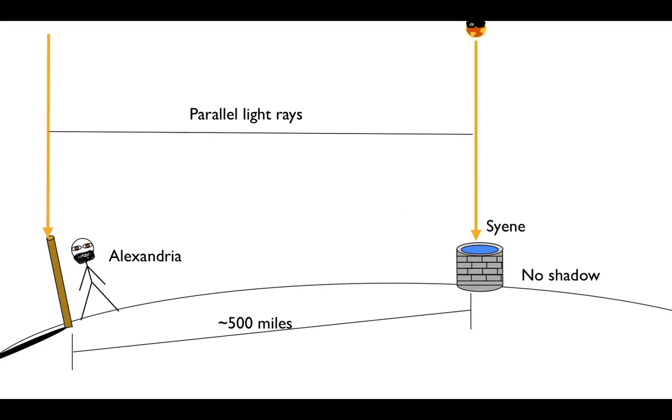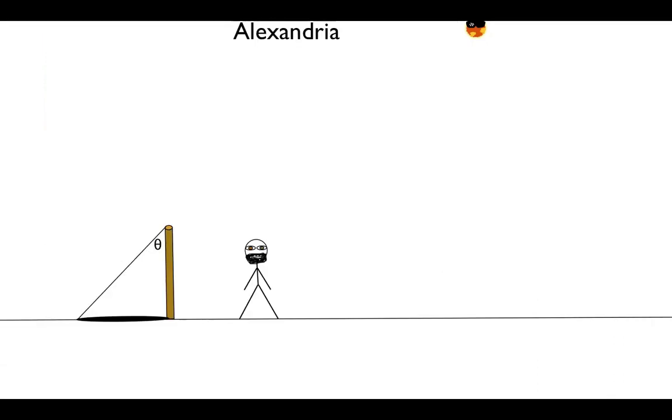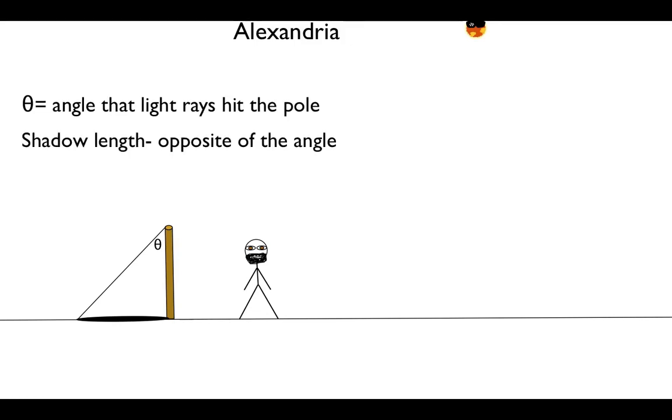So the angle he was looking for was the angle that the Sun was striking the pole, so he could call that theta or just an unknown angle. And then the shadow length was the side opposite the angle, and then the pole height was the side adjacent to the angle. So we have a nice right triangle here. That means we can use basic right triangle trig, which is SOHCAHTOA, something you might remember from school. Since we have the opposite side and the adjacent side, we're going to use tangent.